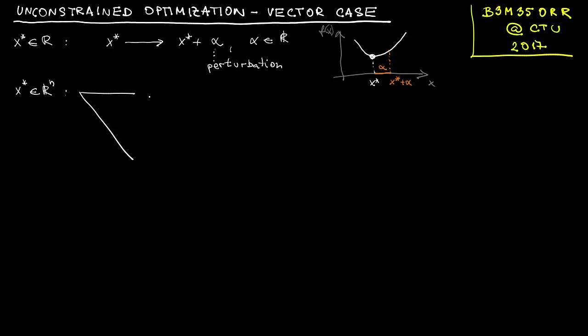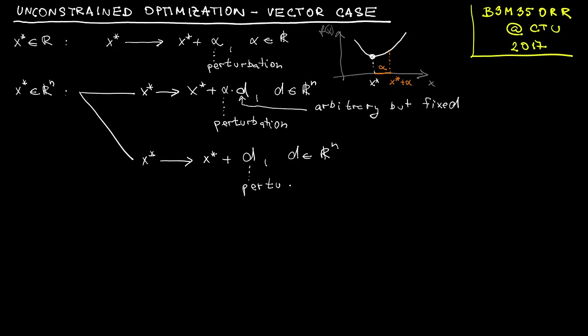So now how does this extend in the vector case? In fact, there are two approaches. One of them is that we will fix the direction and then perturb the vector variable only along that arbitrary but fixed direction. This way we, in fact, translated our vector problem back into the scalar setting. Another approach is that we will start in the vector setting and we will stay there. So the vector d, the perturbation, will contain both the magnitude and the direction.